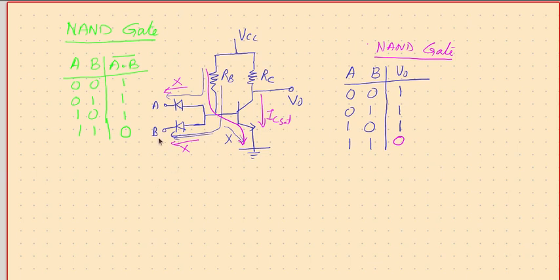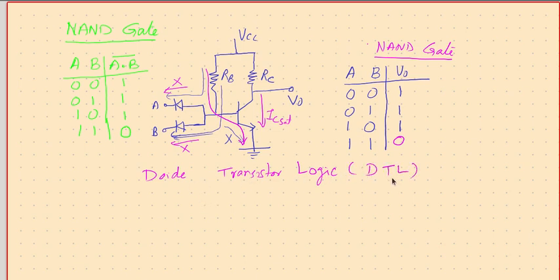To implement this NAND gate, what is required? We require a diode and we require a transistor. This whole logical system is derived using diodes and transistors, so we call this a Diode Transistor Logic — or in short, a DTL circuit. A DTL circuit is one which can provide Boolean operations using diodes and transistors. This is a DTL circuit for the NAND gate.